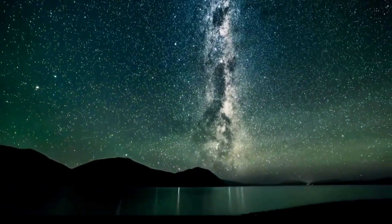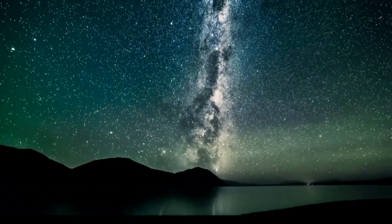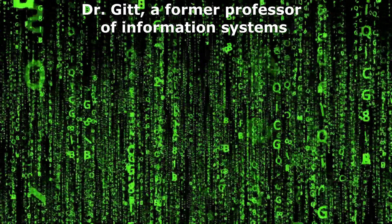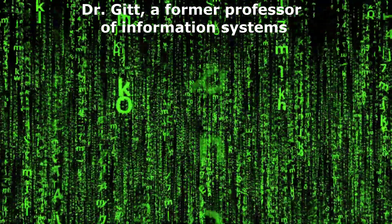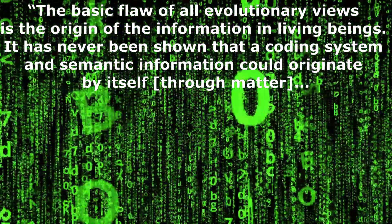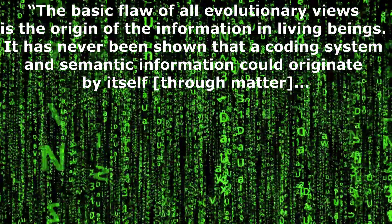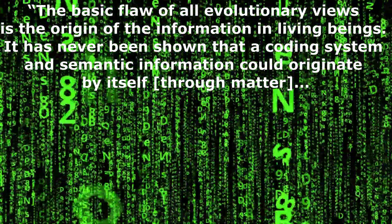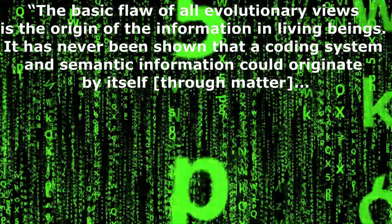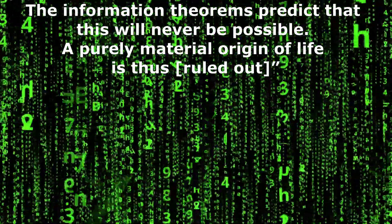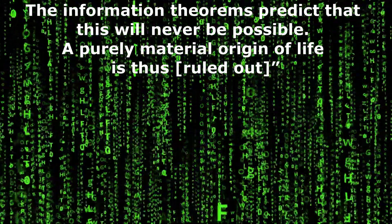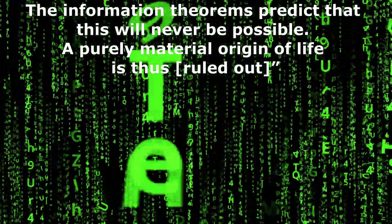Dr. Gitt, a former professor of information systems, explains: The basic flaw of all evolutionary views is the origin of the information in living beings. It has never been shown that a coding system and semantic information could originate by itself through matter. The information theorems predict that this will never be possible. A purely material origin of life is thus ruled out.